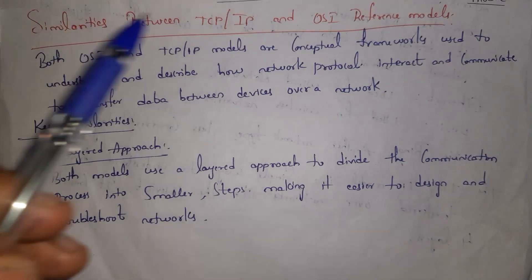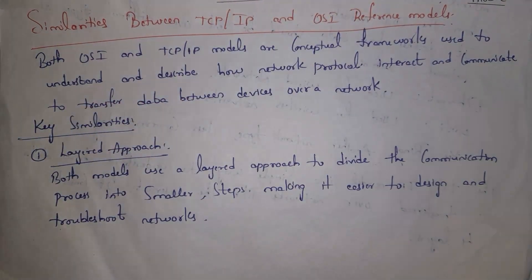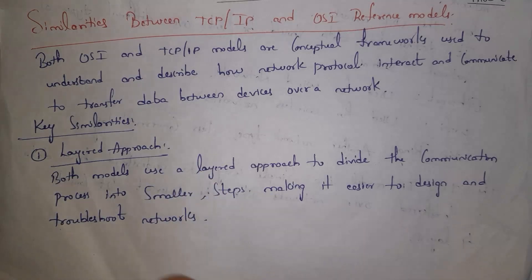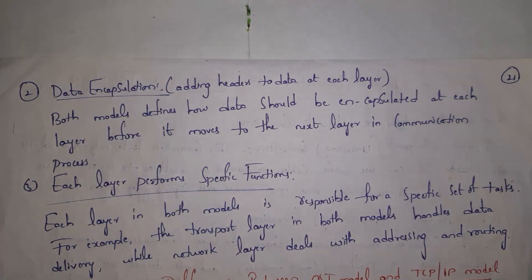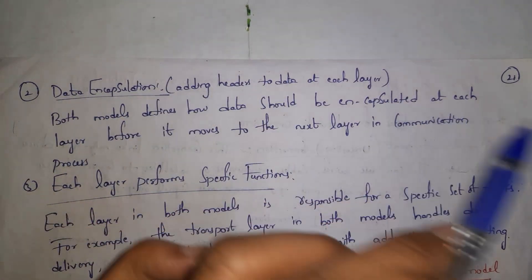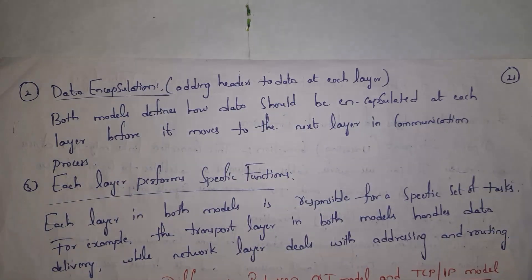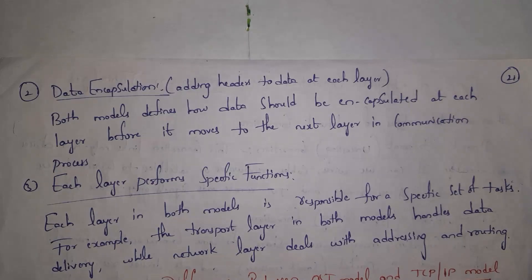Next, the similarities between TCP/IP and the OSI reference model. Both models help us understand how devices communicate over a network. First similarity: layered approach — both TCP/IP and OSI are layered models that divide the communication process into smaller steps, making it easier to design and troubleshoot networks. Second similarity: data encapsulation — each layer adds extra information (headers) to the data, and both models define how data is encapsulated at each layer. Third similarity: each layer performs certain specific functions in both models.